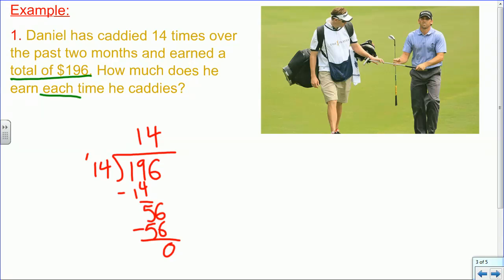So we've got to make sure that we're answering the question. So our answer, we think, is 14. How much does he earn each time he caddies? Okay, this must be a dollar amount. So we want to put it in sentence form. He earns $14 each time, or each round would be the proper term for golf. Let's go on to another example.